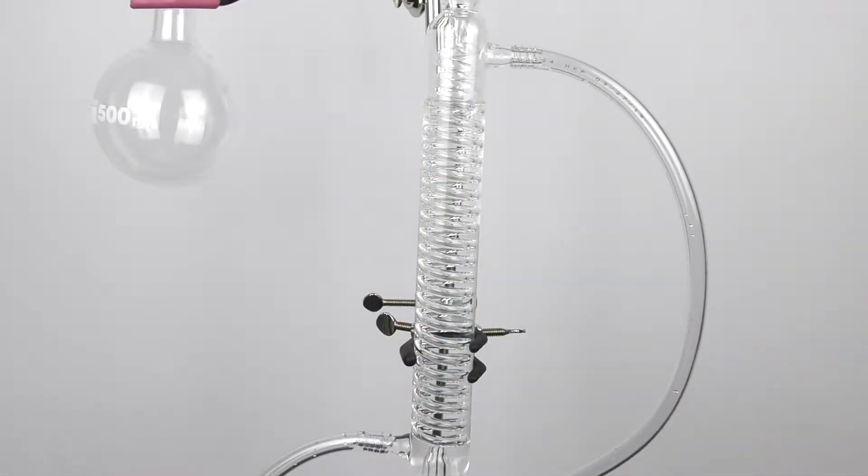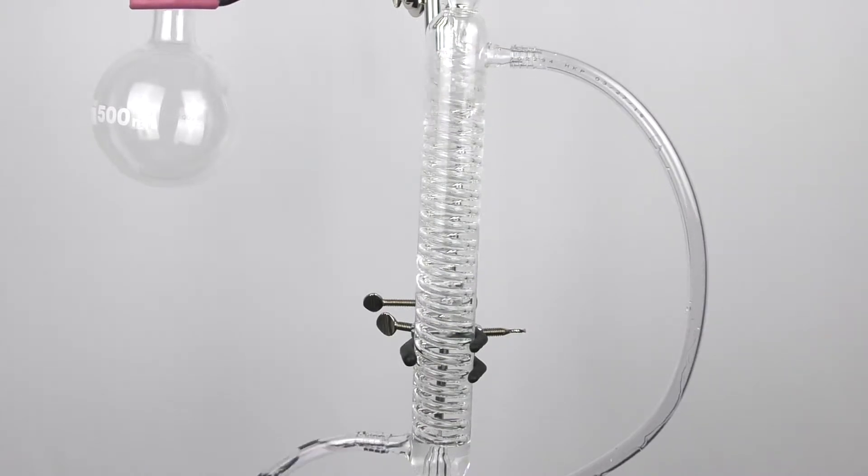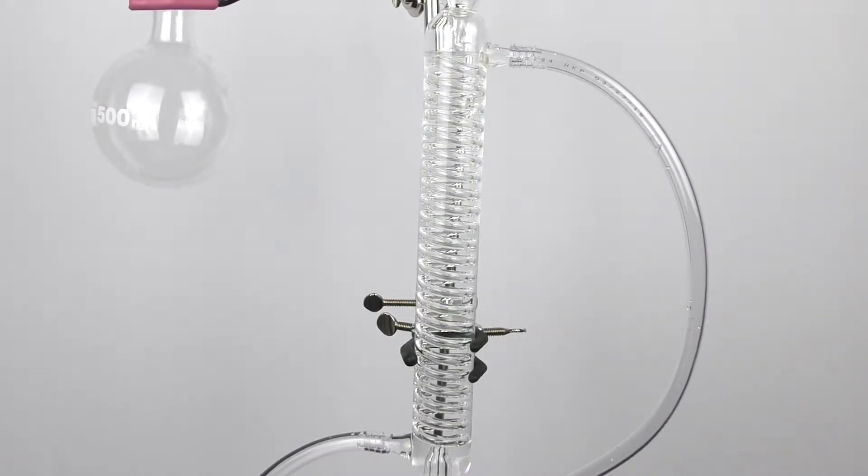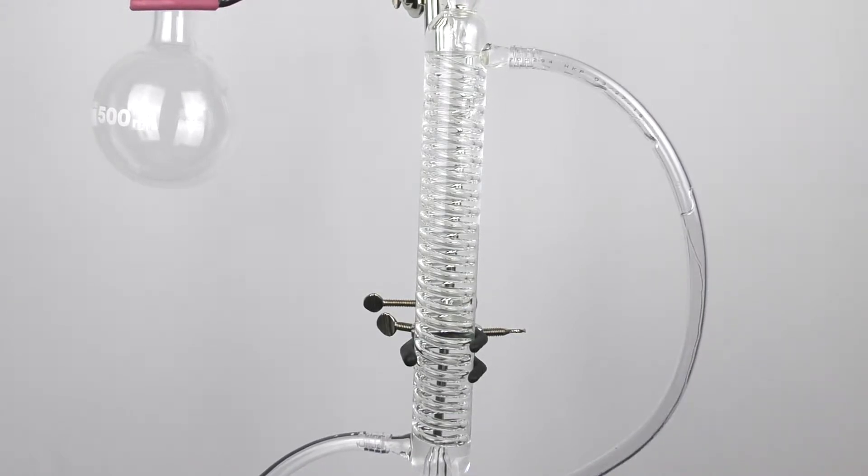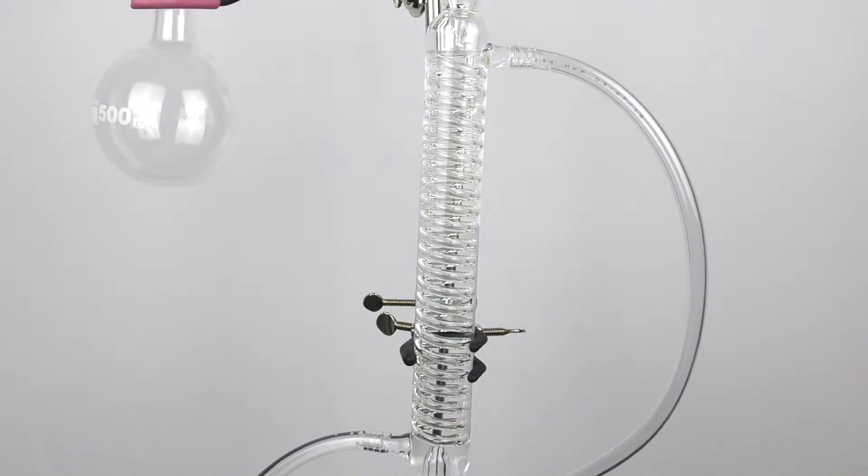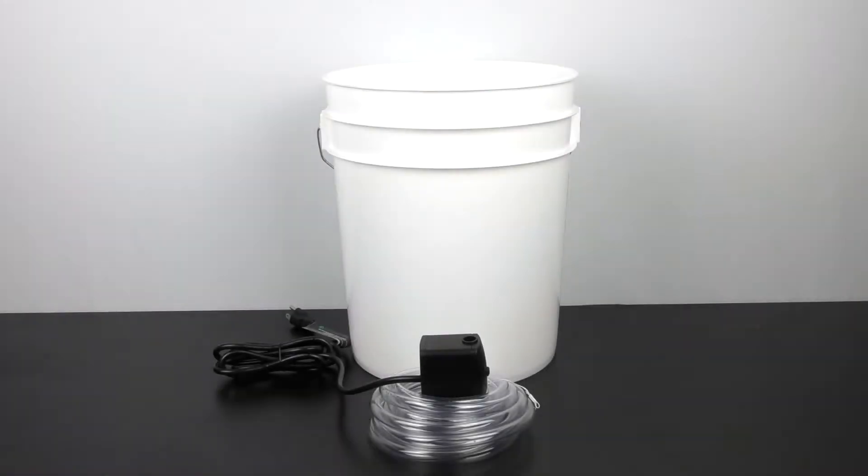For a cooling system you have a variety of choices. You can simply use flowing tap water out of the cold water faucet in your lab to go through the condenser. You can get an expensive chiller unit or you can use a simple bucket with a pond pump, some ice water, and some tubing.